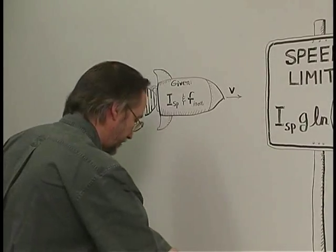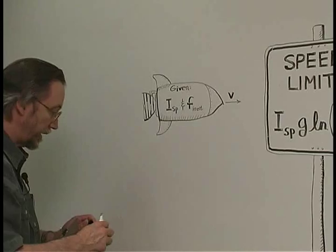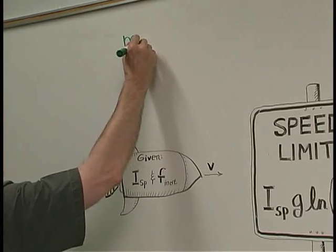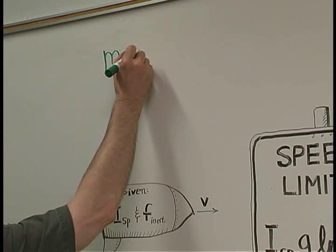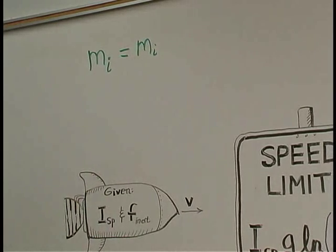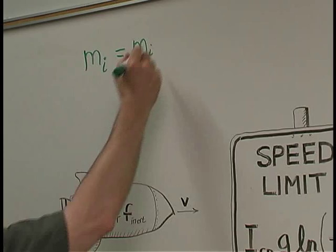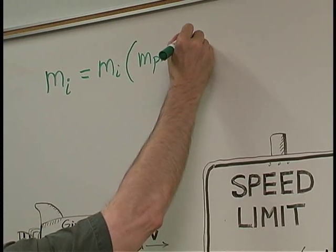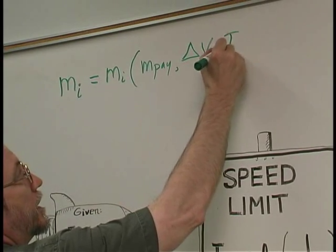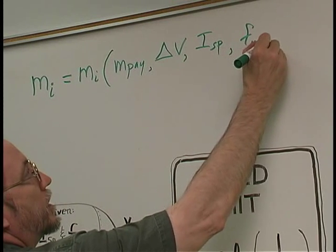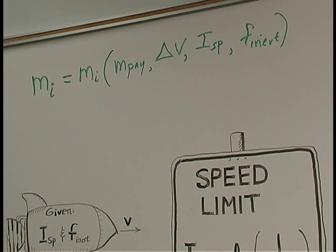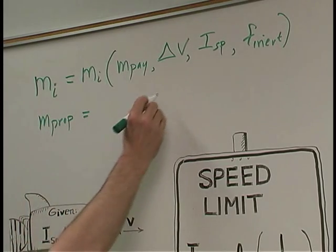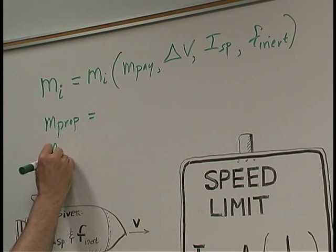So let's remember that the ideal rocket equation gives the total mass of the rocket. That's everything. That's payload plus inert mass plus propellant is a function of the payload, the delta V that you're asking for, the ISP, and the inert mass fraction. Similarly, the propellant mass is dependent on the same terms that we see here, and so is the inert mass.